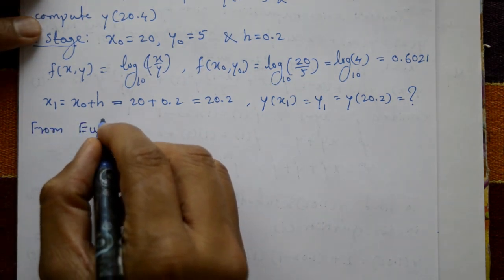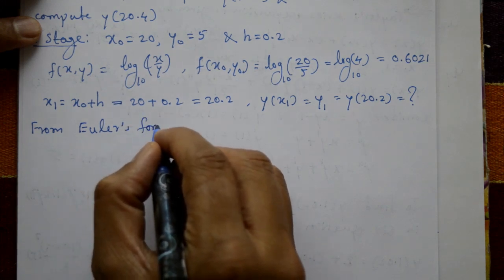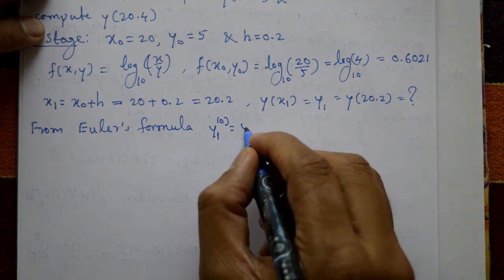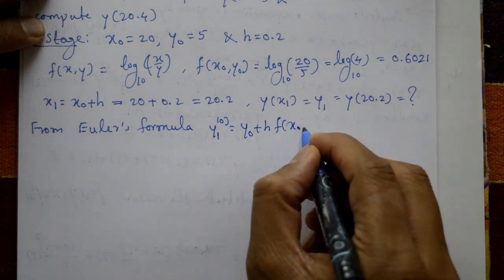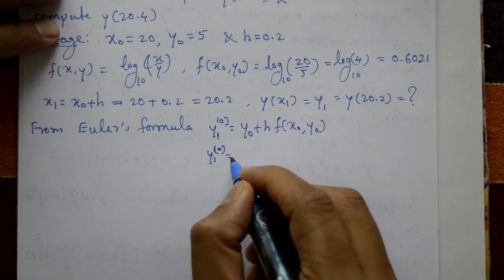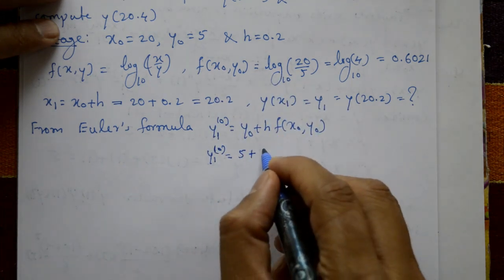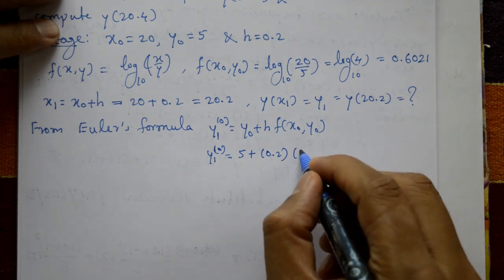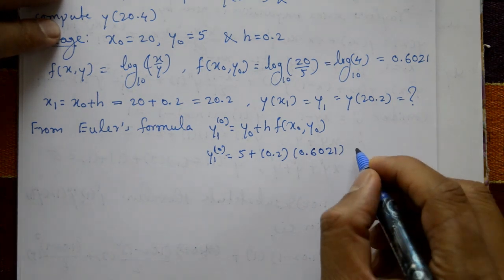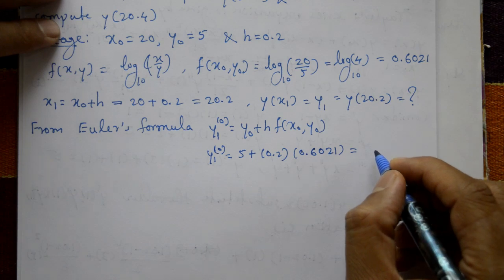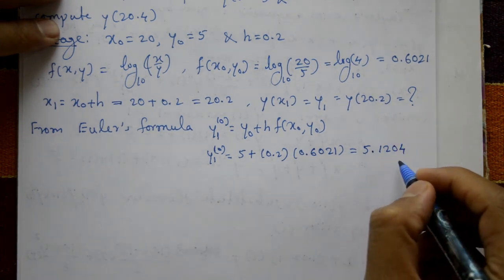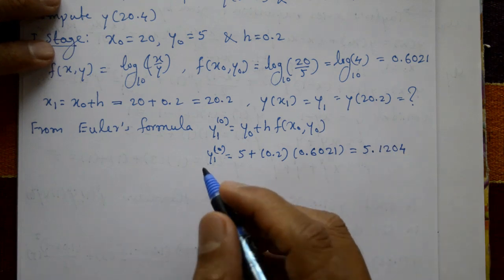First, from Euler's formula — first iteration: y₁ = y₀ + h × f(x₀, y₀). Substituting values: y₀ = 5, h = 0.2, and f(x₀, y₀) = 0.6021. This gives y₁ = 5 + 0.2 × 0.6021 = 5.1204. This value is not accurate, so we proceed to Modified Euler's formula.